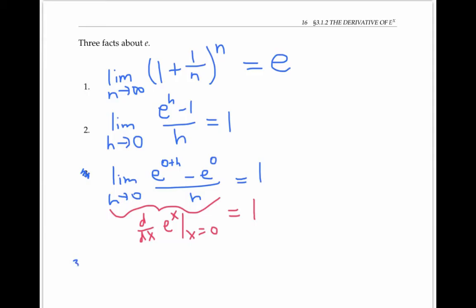So for the third fact, the third fact talks about the derivative of e to the x in general. And that third fact is that the derivative of the function e to the x is the function e to the x. e to the x is its own derivative.